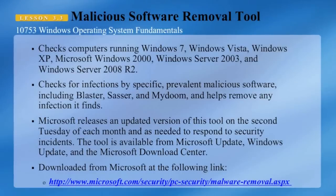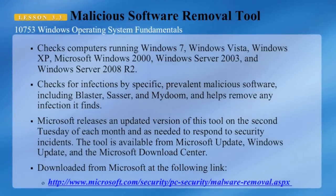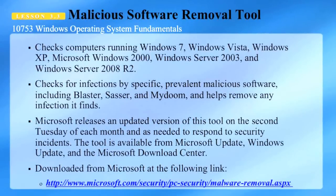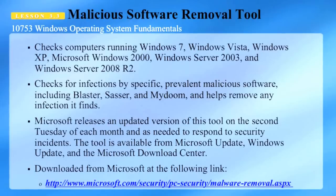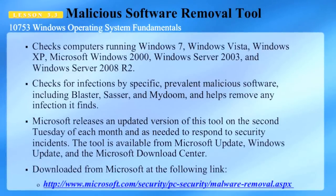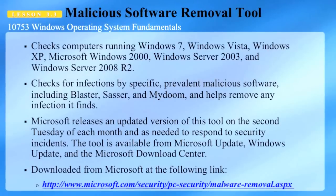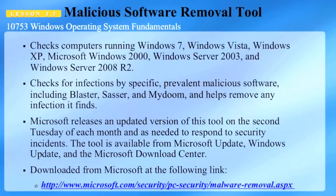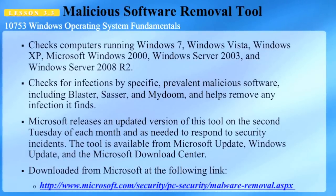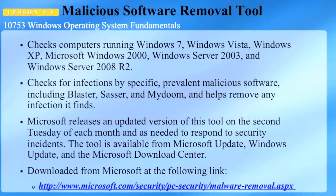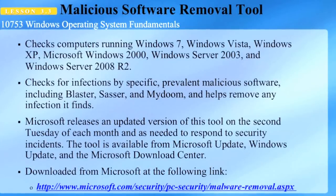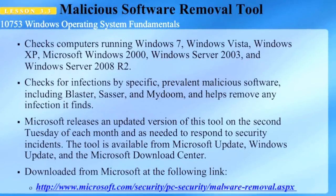The Malicious Software Removal Tool checks computers running Windows 7, Windows Vista, Windows XP, Microsoft Windows 2000, Server 2003, and Server 2008 R2. It checks for infections by specific prevalent malicious software, including Blaster, Sasser, and MyDoom, and helps remove any infection it finds. Microsoft releases an updated version of this tool on the second Tuesday of each month and as needed to respond to security incidents.